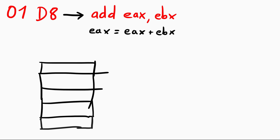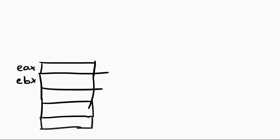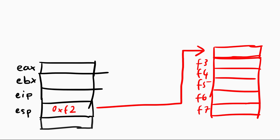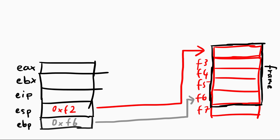Registers are just small memory cells in the CPU which fulfill different purposes, and different architectures have different registers. On Intel we have general purpose registers like EAX and EBX that the programmer is free to use. But there are also special registers like EIP, the instruction pointer, which contains the address pointing to where the next instruction will be. There is also the stack pointer ESP, which points to the top of the stack, and the base pointer EBP, which together with the stack pointer defines a stack frame.